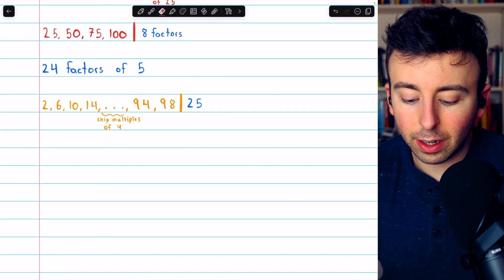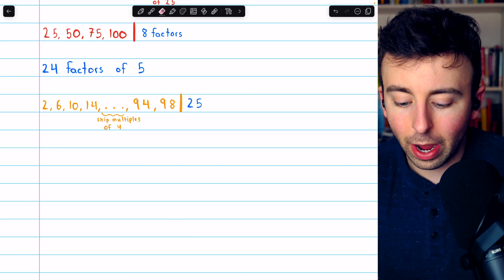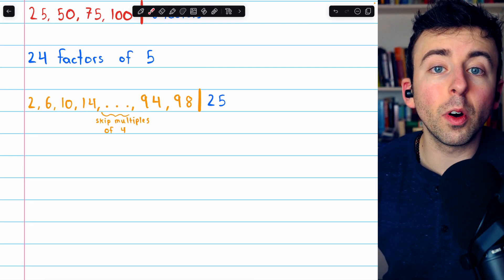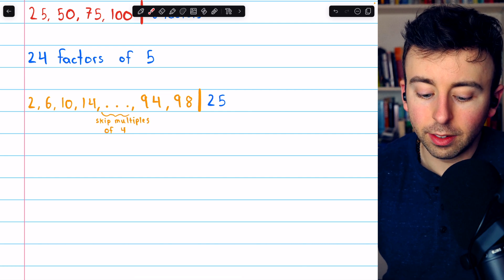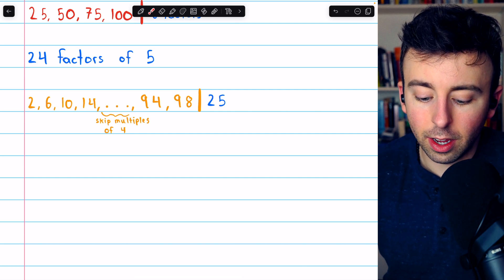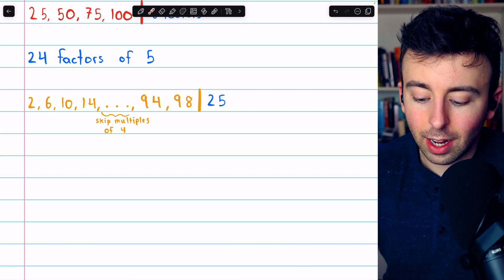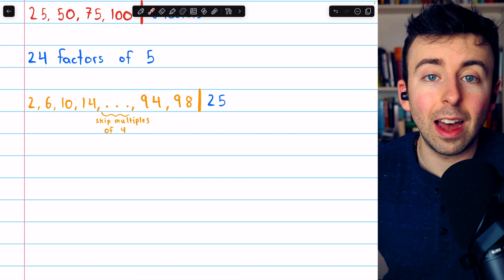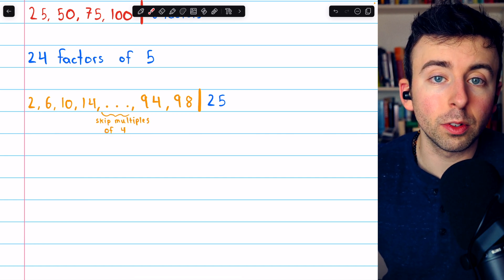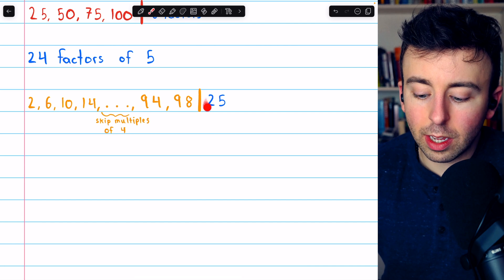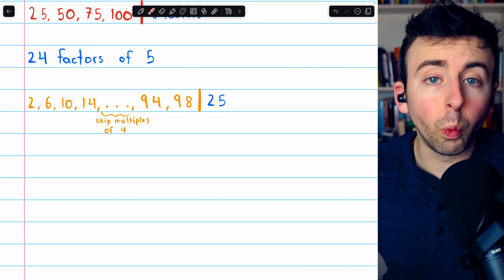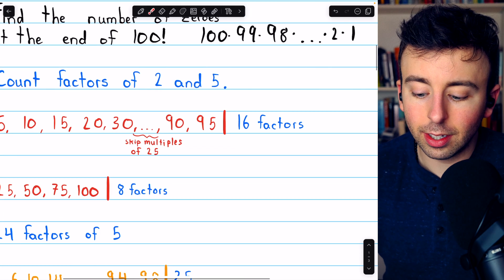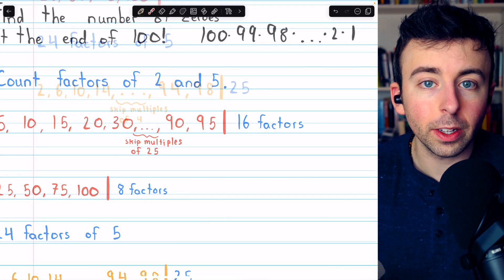Now, we could count factors of 2 in the exact same way. We could start by counting the numbers that have 1 factor of 2: 2, 6, 10, 14, and so on. We'd skip the multiples of 4 because those have 2 factors of 2. That would give us 25 total numbers with 1 factor of 2 in the product that defines 100 factorial.